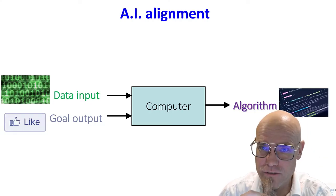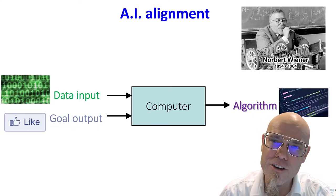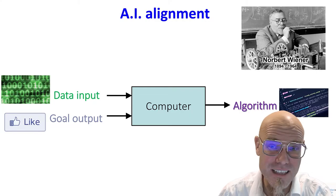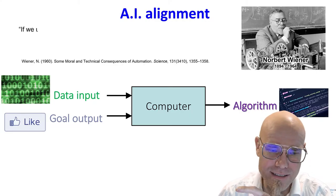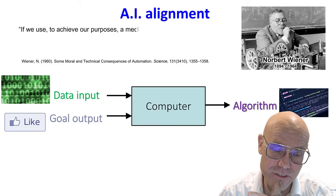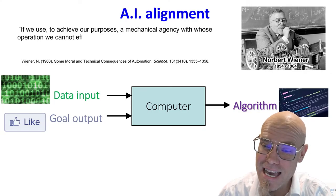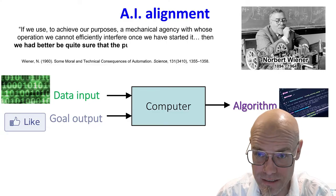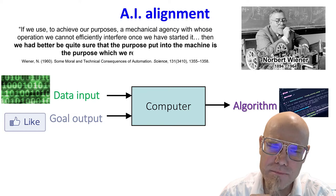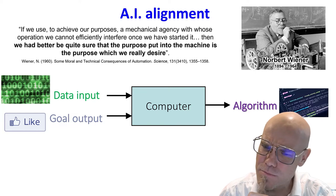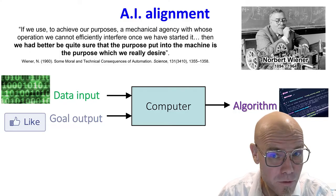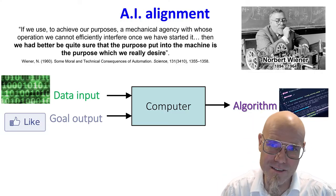When it comes to the automation of knowledge, one of the pioneers — Professor Norbert Wiener of cybernetics, the early days of AI — already warned us in the 1960s. Wiener said: 'If we use to achieve our purposes a mechanical agency with whose operation we cannot efficiently interfere once we have started it, then we had better be quite sure that the purpose put into the machine is the purpose which we really desire.' Are we sure? We have to really talk about that.